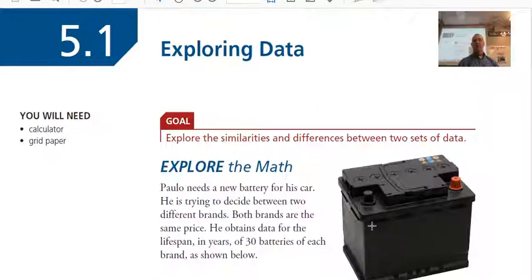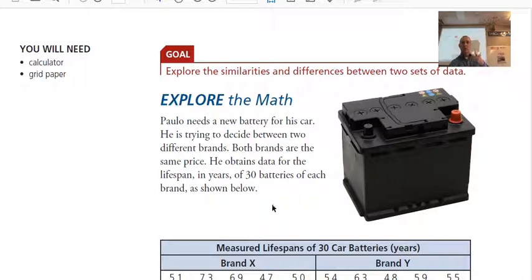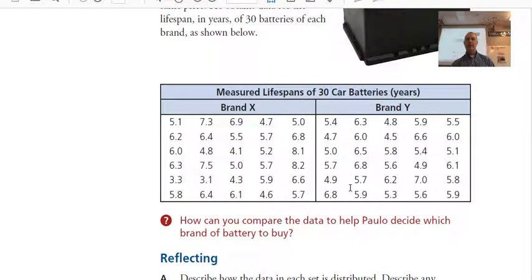So, a lot of these first sections are pretty short. This one is. We are going to take the time to explore the math. I'm going to go through this exercise with you. I'm going to ask you to do it with a partner to explore this situation. So, let's read it. It says, Paolo needs a new battery for his car. He's trying to decide between two different brands. Both brands are the same price. He is able to obtain some data for the lifespan in years of 30 different batteries of each brand as shown. So, here's a car battery. Looks pretty typical there. And here's the data that he was able to find.